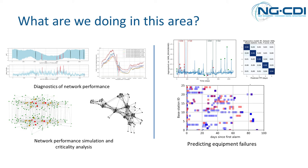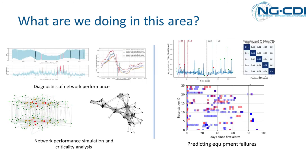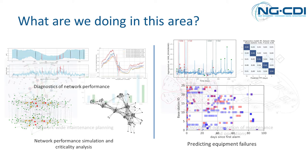The bottom graph shows Rishi's work on using market basket analysis — commonly used in recommender systems — to predict critical alarms over the RAN network. I won't go into detail here because you'll hear more about his work in the afternoon session.